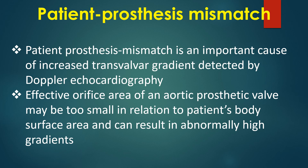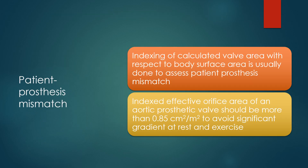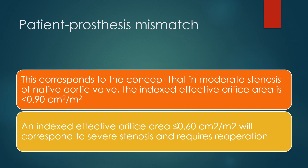Patient-prosthesis mismatch is an important cause of increased transvalvular gradient detected by Doppler echocardiography. The effective orifice area of an aortic prosthetic valve may be too small in relation to the patient's body surface area, resulting in abnormally high gradients. Indexing of calculated valve area with respect to body surface area is done to assess patient-prosthesis mismatch. Indexed effective orifice area of an aortic prosthetic valve should be more than 0.85 cm²/m² to avoid significant gradient at rest and exercise. An indexed effective orifice area ≤ 0.6 cm²/m² corresponds to severe stenosis and requires re-operation.